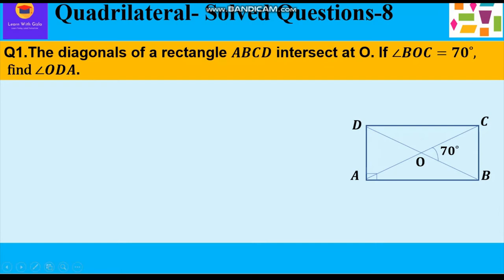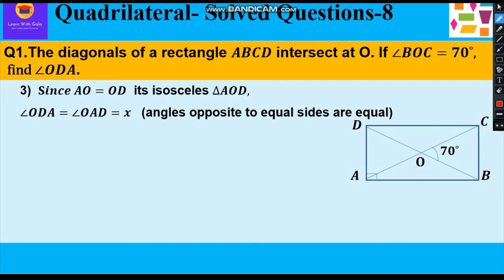Since AO is equal to OD, we can say that triangle AOD is an isosceles triangle and we know in an isosceles triangle, angles opposite to equal sides are equal. So we can say angle ODA is equal to angle OAD.